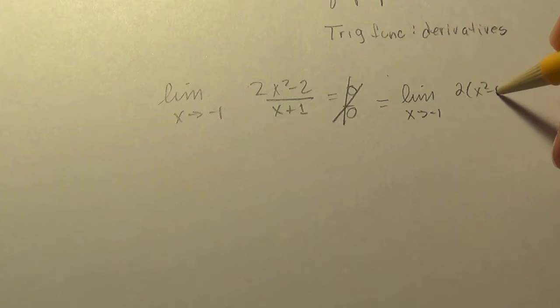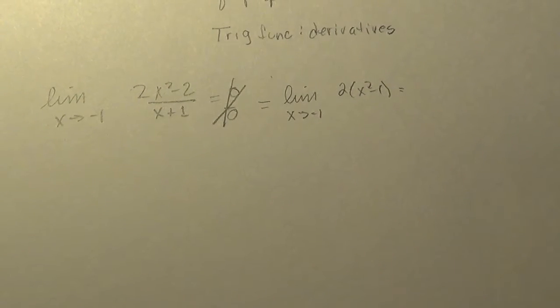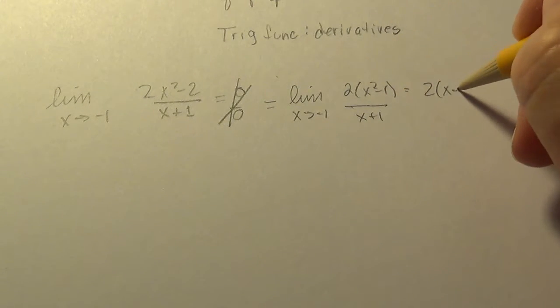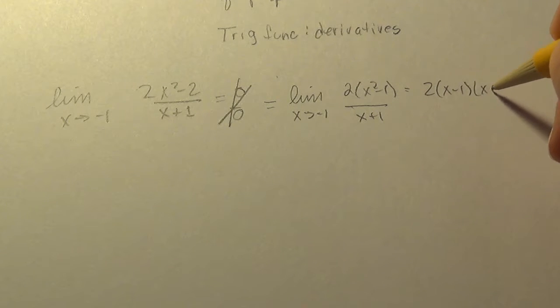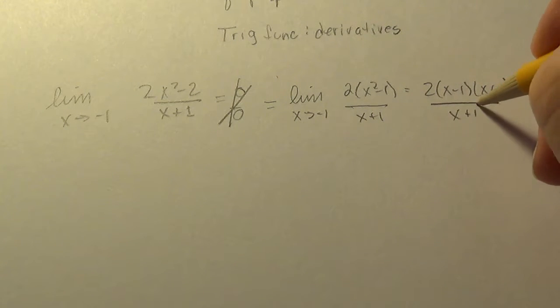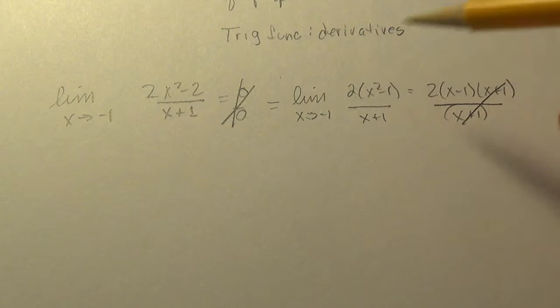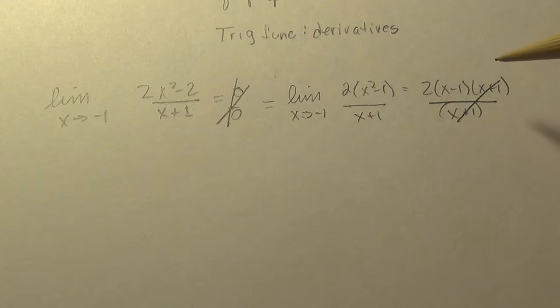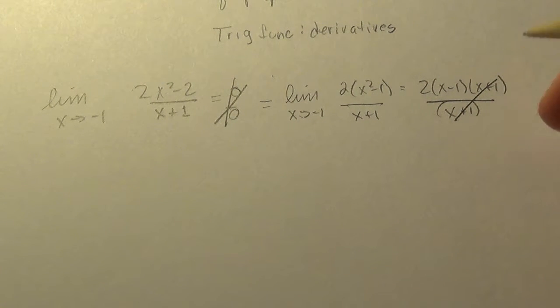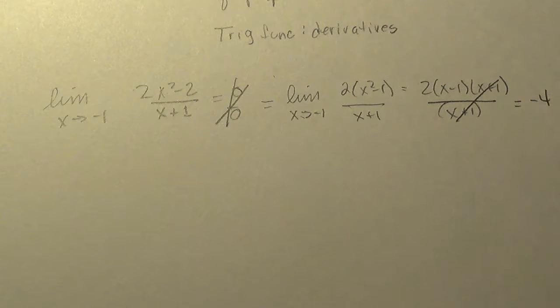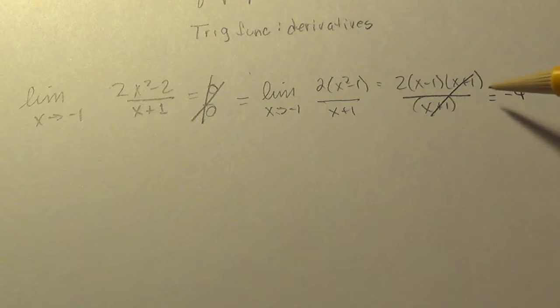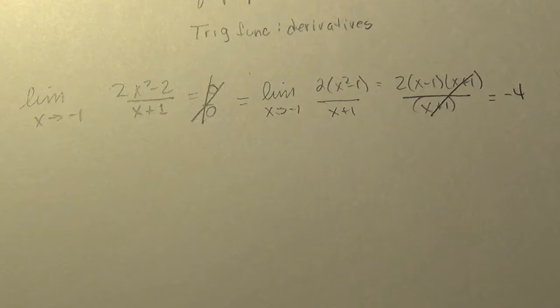So then we always bring out some algebra, and usually it's factoring. So I see the top I can pull out a 2, and then I have a difference of two squares on the top: x minus 1, x plus 1. And now can I take the limit as x approaches minus 1? 2 times minus 1 minus 1 is 2 times minus 2 which is minus 4.